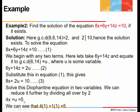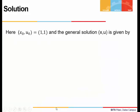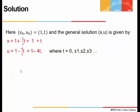The initial solution to 4x + u = 5 can be seen to be x = 1 and u = 1, since 4 + 1 = 5. So x₀ = 1 and u₀ = 1, giving the general solution x = 1 + t and u = 1 − 4t.